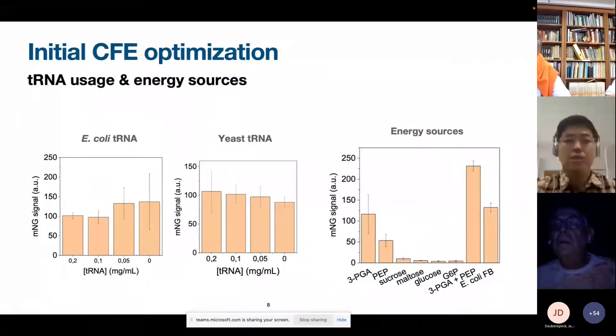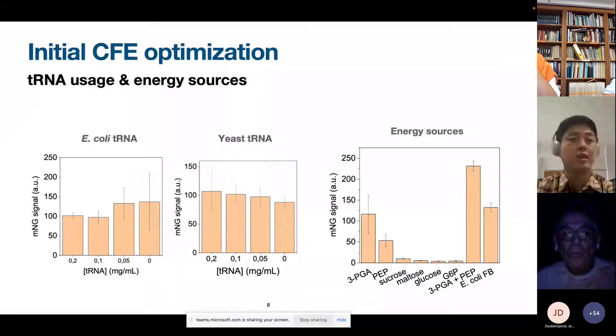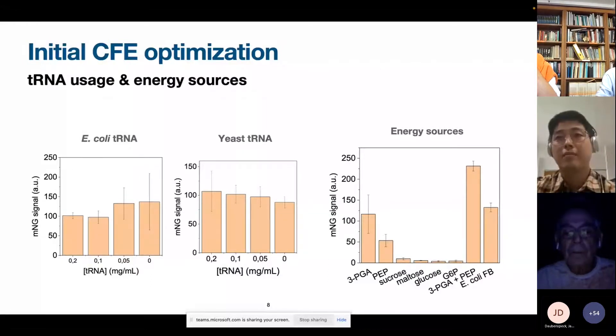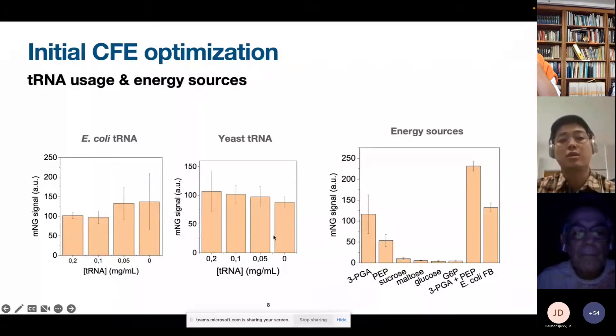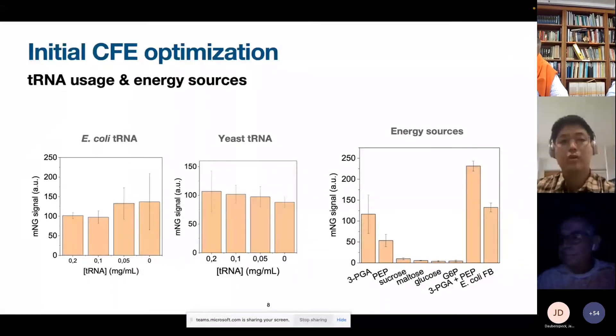We also did some initial optimization of the conditions of the reaction. So the first thing that we wanted to know is if the expression of proteins relies on the addition of external tRNAs or the reaction uses tRNAs that are already in the lysate. So here we tested a range of different concentrations for E. coli tRNAs in the reaction mix, and also for yeast tRNA. And it seems that there's not much difference, even in the absence of these external tRNAs, which means that probably the expression of proteins is relying on the endogenous tRNAs.